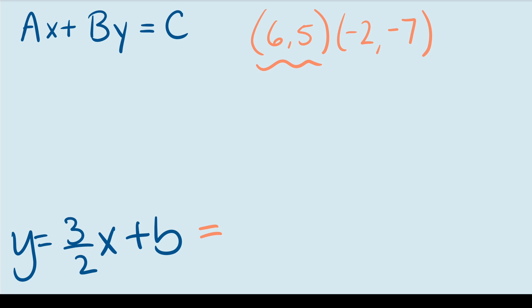So I'll use 6, 5. If x is equal to 6, then I have 3 halves times 6 plus b and it's equal to y, which in this case is 5. 3 halves times 6 is equal to 9 because the 2 gets cancelled out and we're left with 3 times 3. So then we have 9 plus b.